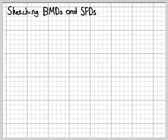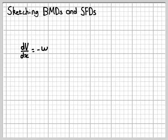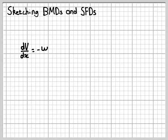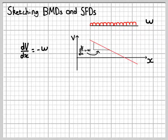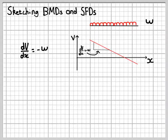To develop sketches we're going to use two relationships from beam analysis. The first relates shear force V to the load W: the derivative of the shear force equals the negative value of the load, or in other words the gradient of the shear force diagram equals the negative of the load. Consider a small section of beam with a uniform load — the gradient of the shear force diagram must be negative because the load is positive, and linear because the load is constant.